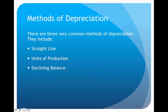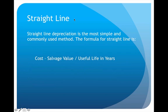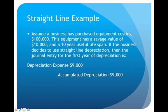The three methods include straight-line, units of production, and declining balance. The straight-line method was discussed in our lecture on adjustments. Straight-line is the most commonly used — probably because it's so simple and straightforward. The formula is: cost minus salvage value, divided by useful life in years. Once you calculate that answer, you never have to recalculate — you book the same depreciation expense every single year, which is why it's called straight-line.